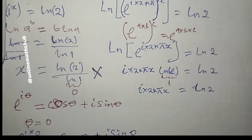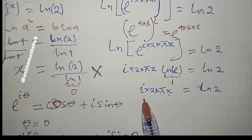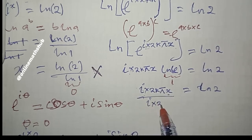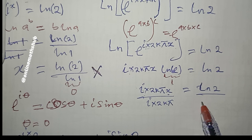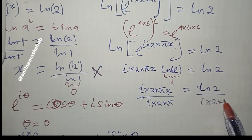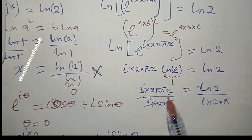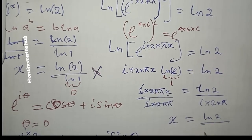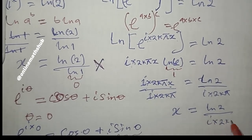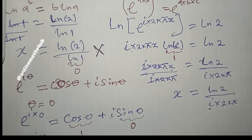To get the value of x, I divide both sides by the coefficient of x, which is i·2kπ. Cancelling, I'm left with x = ln(2) / (i·2kπ). However, we cannot leave i in the denominator, so we need to bring it up to the numerator.